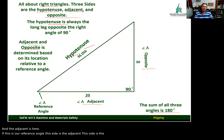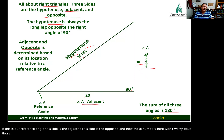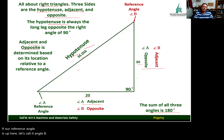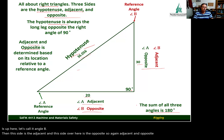Don't worry about the numbers yet — those are just values we're going to work with in our examples. If our reference angle is up here, let's call it angle B, then this side is the adjacent and this side is the opposite. So again, adjacent and opposite are relative to the reference angle and the problem that we're dealing with.